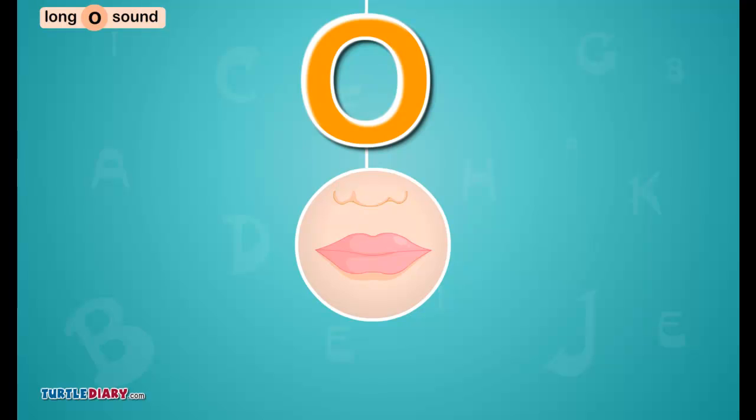How to make the sound. Stick out your lips, making them rounded. Keep your mouth open a little. Let air flow out of your mouth to make the O sound, as in oak.